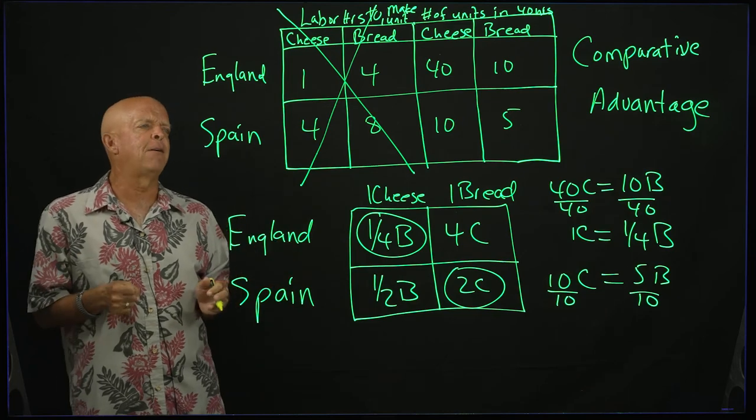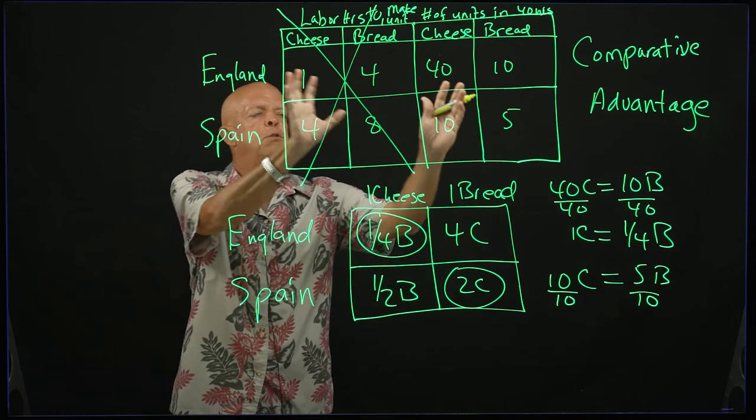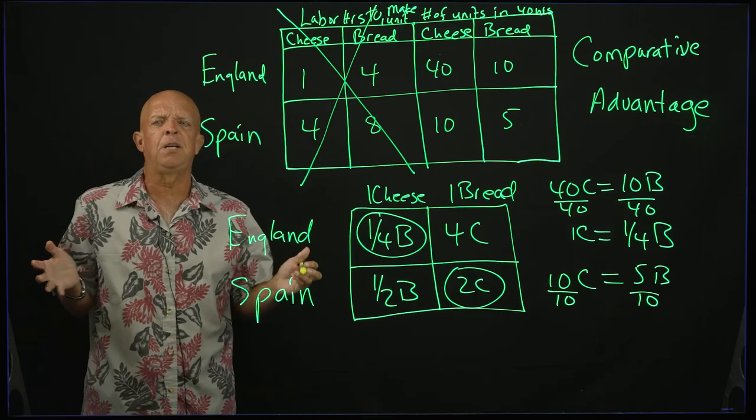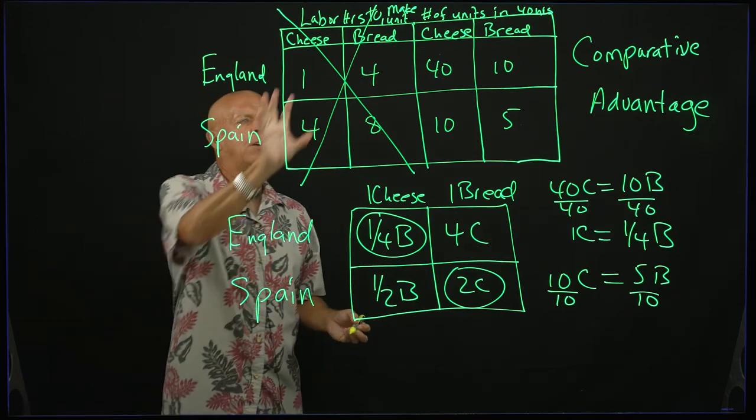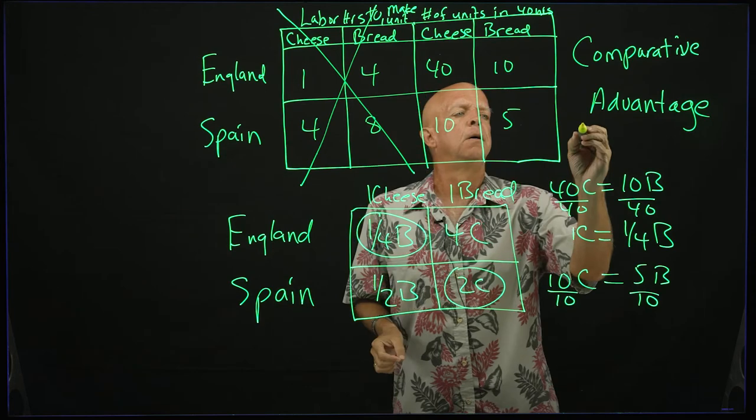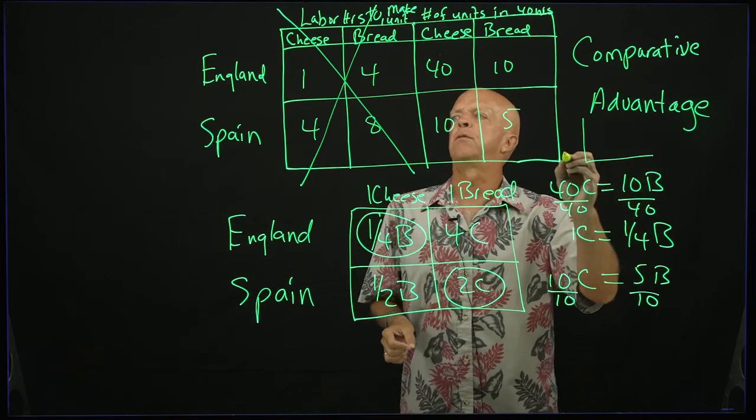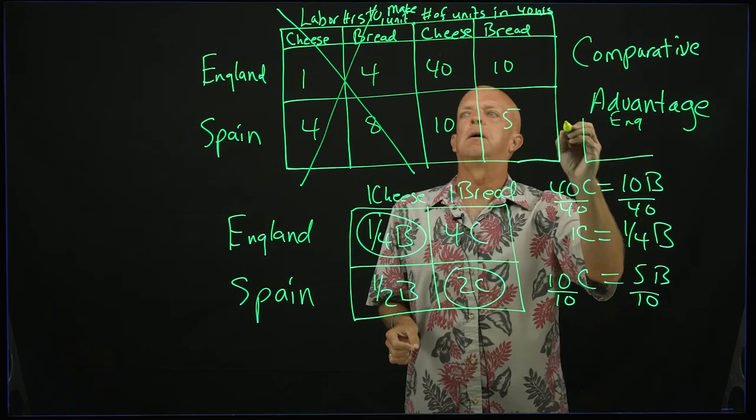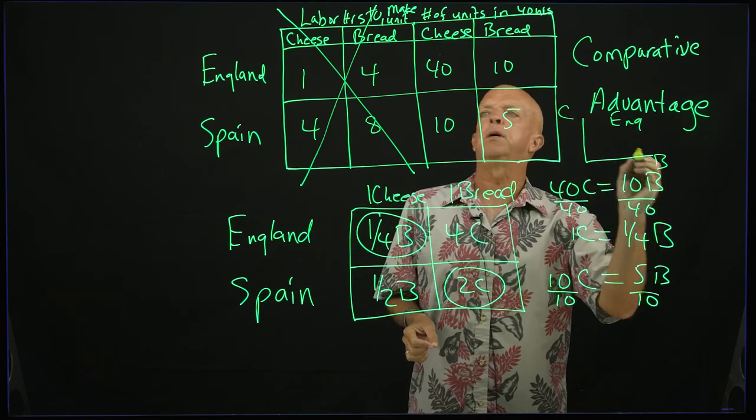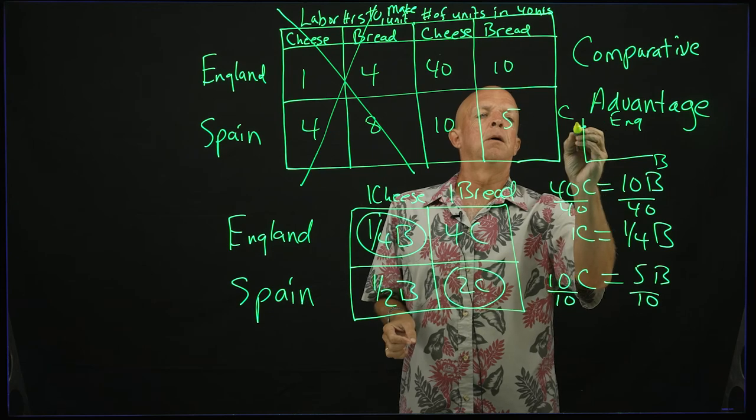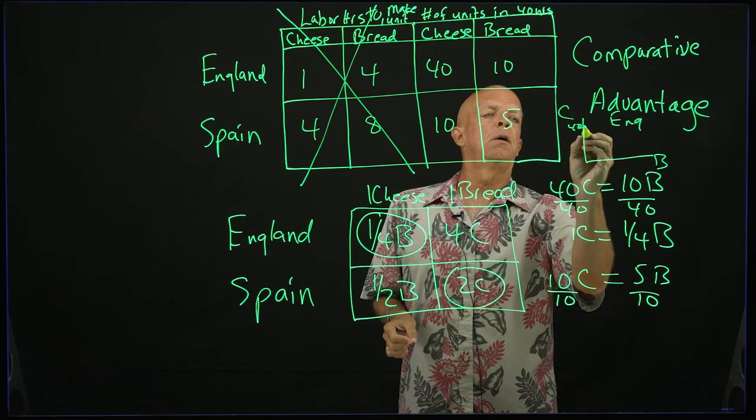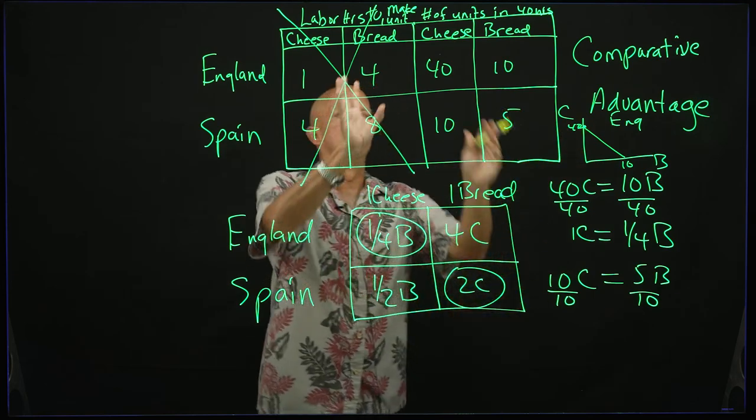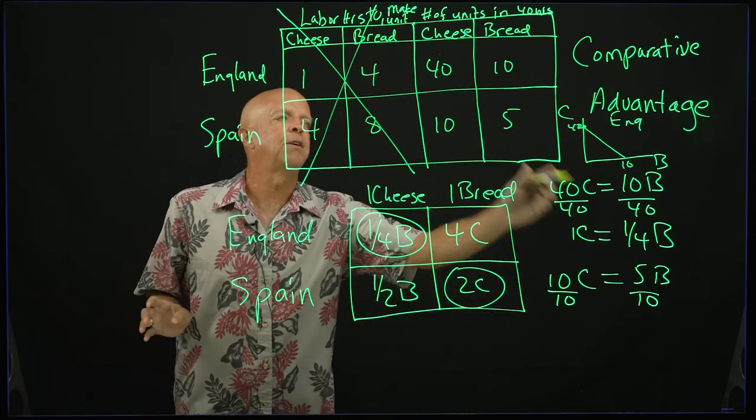So all questions of comparative advantage come down to making this particular table. Even if you were to see the questions on a graph. Let's see. Let's say this is England. And this is cheese and bread. 40, 10. You just take that number, put it in here, do this calculation.